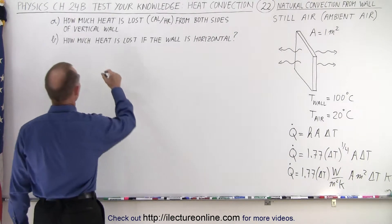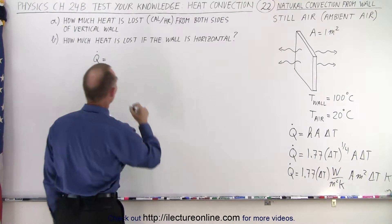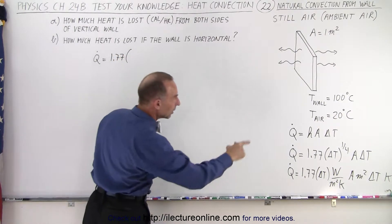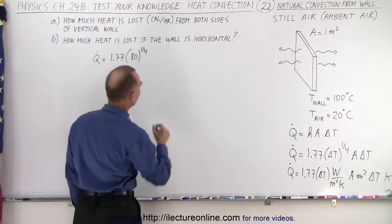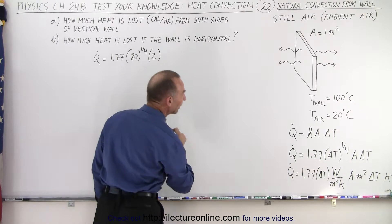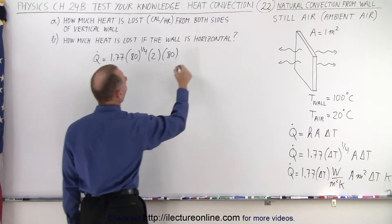So plugging that in, let's see what we get. So Q dot is equal to 1.77 times the delta T, which would be 80 to the one-quarter power, times the area, which is of course two square meters, one meter on each side, and delta T would be 80. And that of course is in terms of watts.